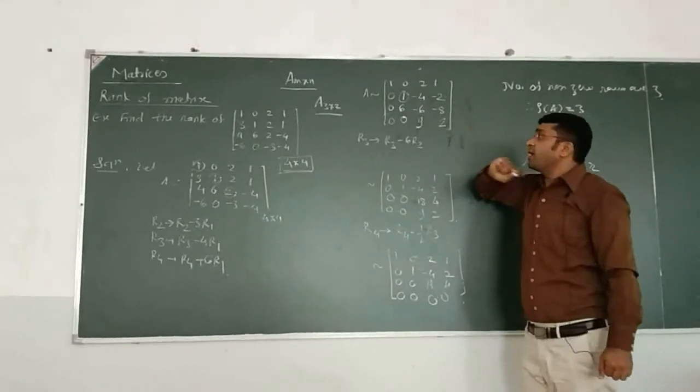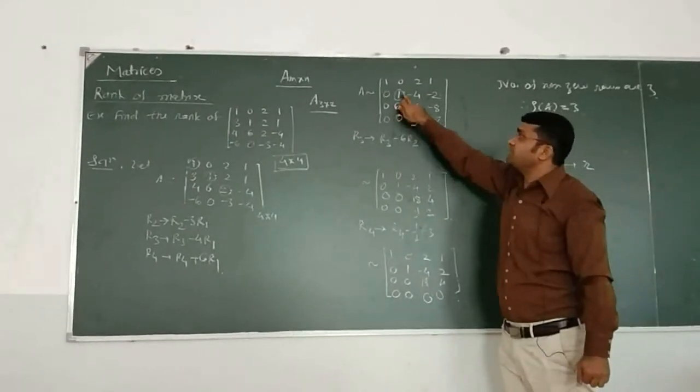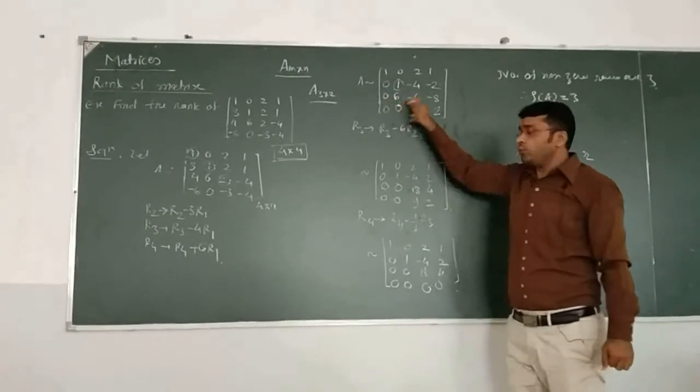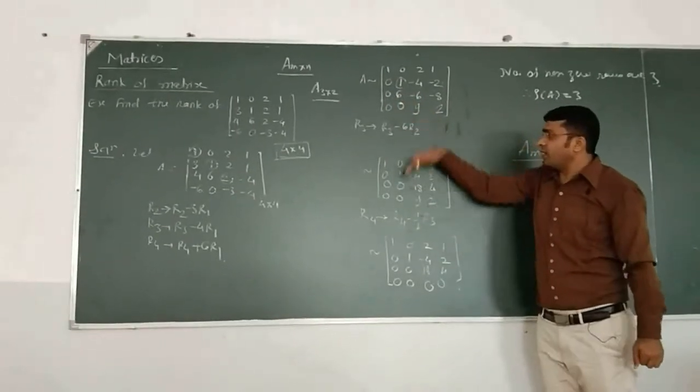We have to make only this element 0. That is present in R3. So I will apply the operation. What is it? R3 minus 6 times R2. So that this element will become 0. So here is 0, after applying the operation.